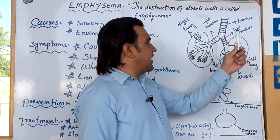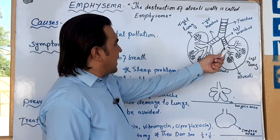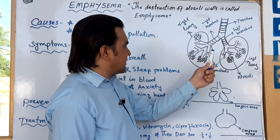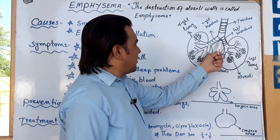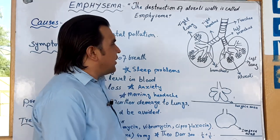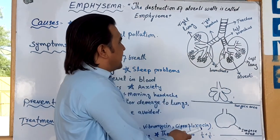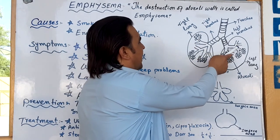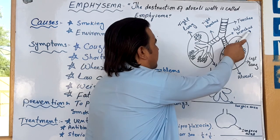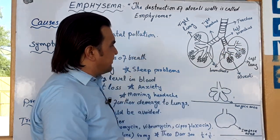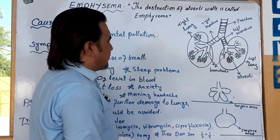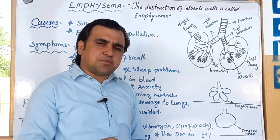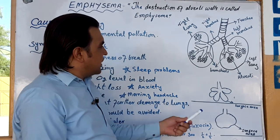The lungs have two bronchi. The bronchi divide and redivide — the right bronchus goes into the right lung, and the left bronchus goes into the left lung. The bronchi divide and redivide further into smaller branches.